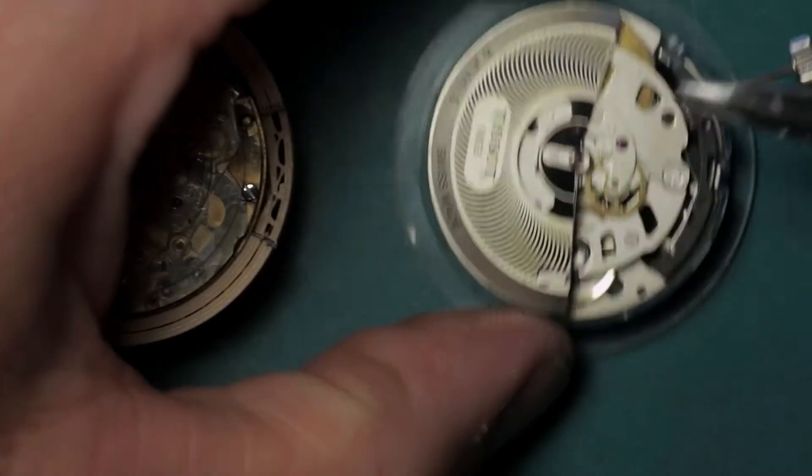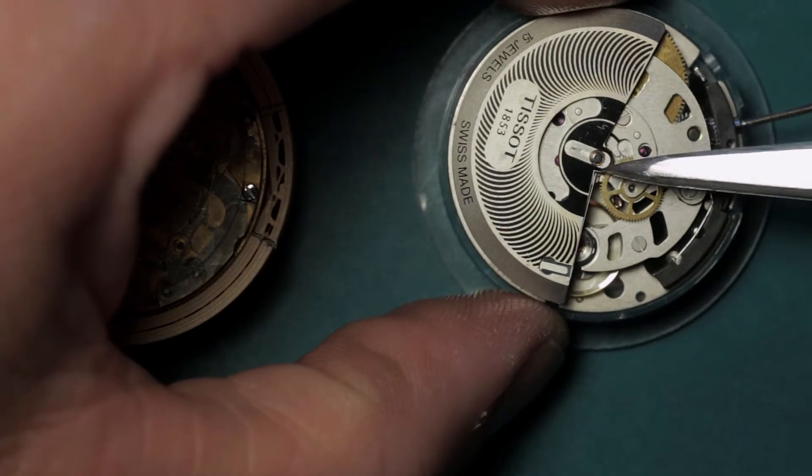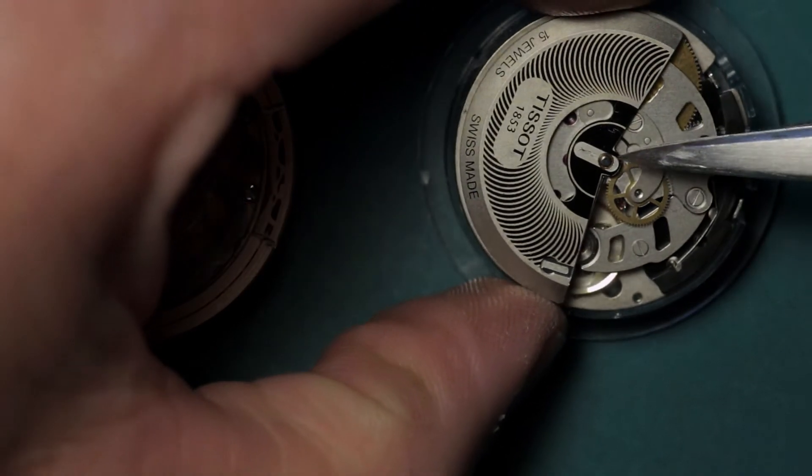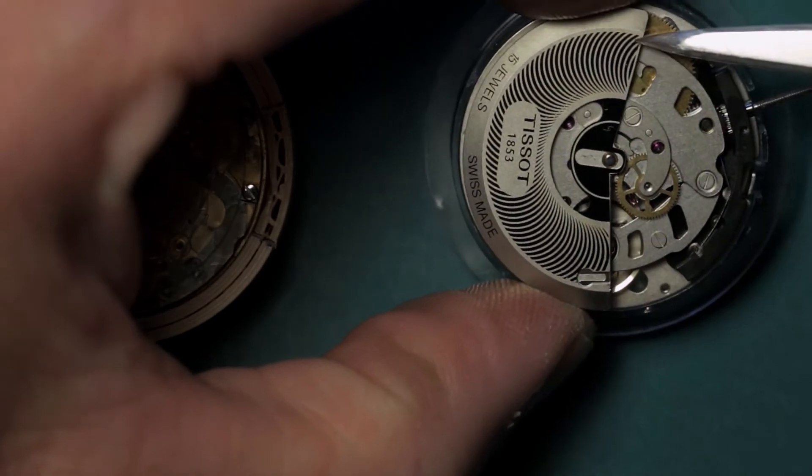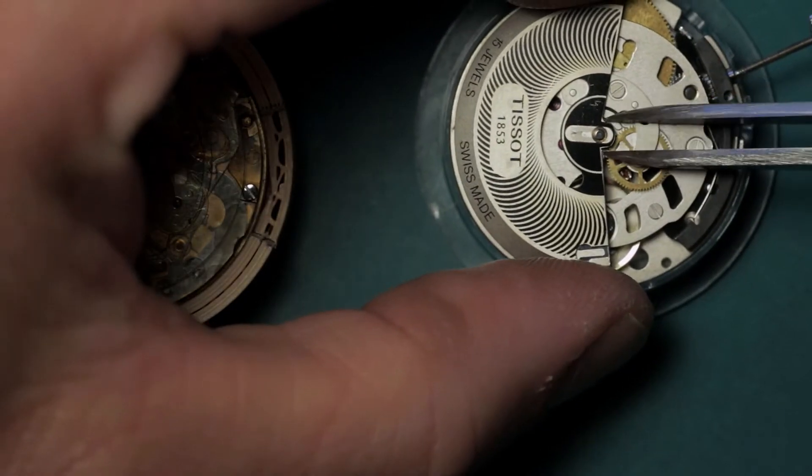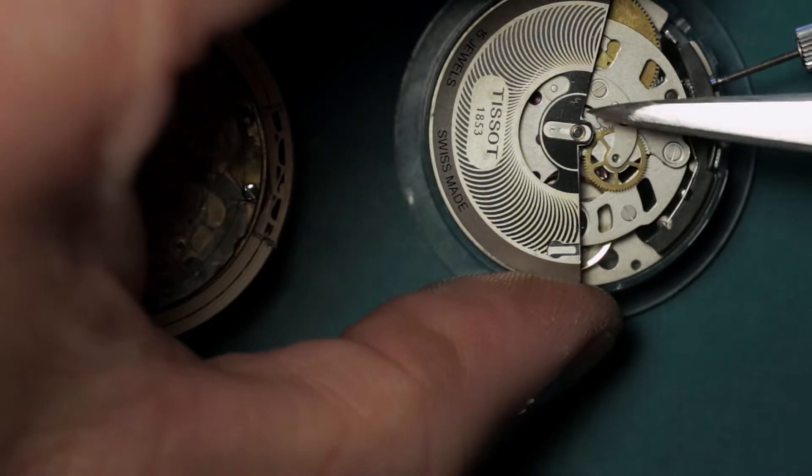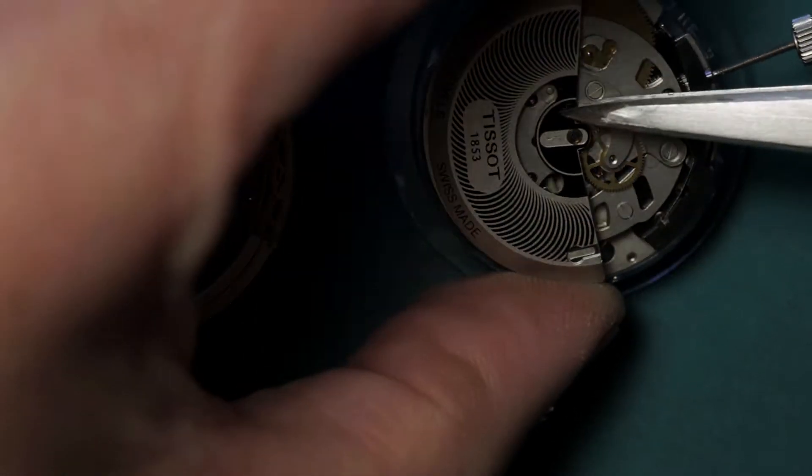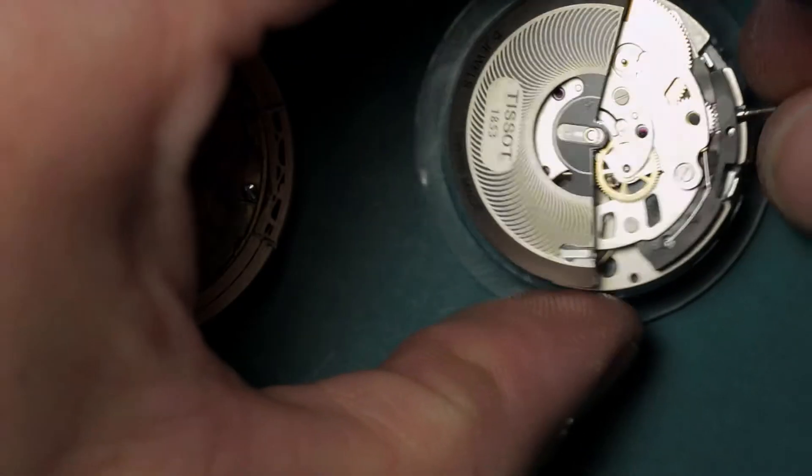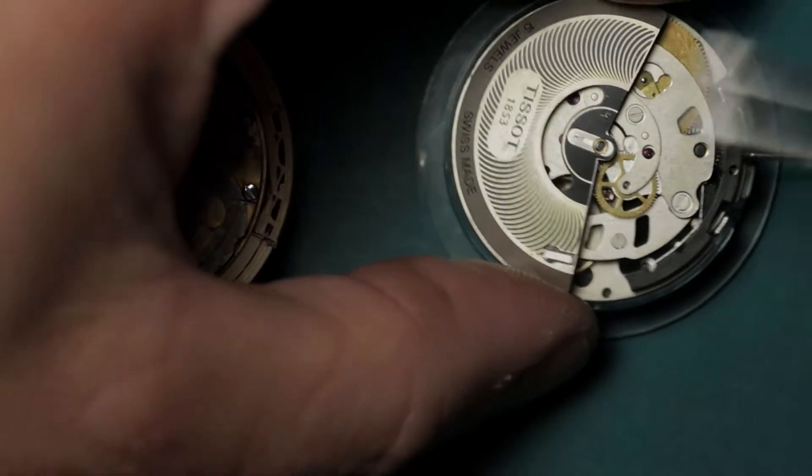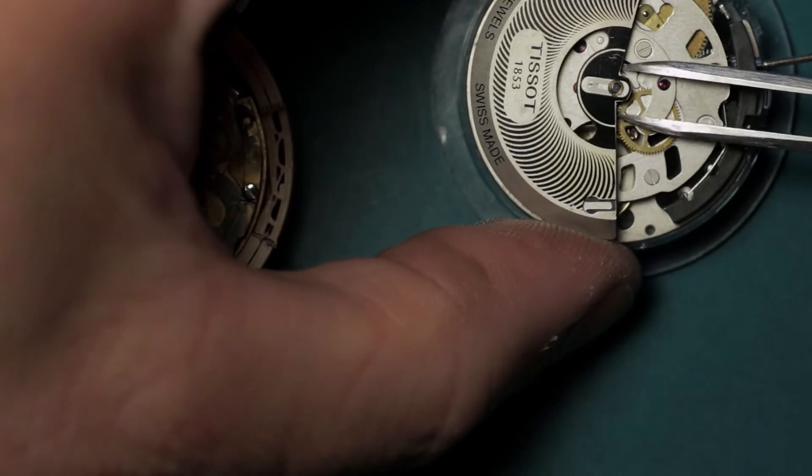So the oscillating weight is held on by a spring clip, as you saw there, and it lifts off. If I can get this to cooperate, it just simply slides up and off. So you'll have to excuse my use of bare fingers here, but this is, as I said, my own watch movement.